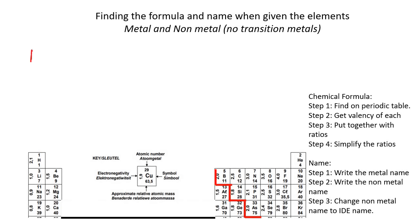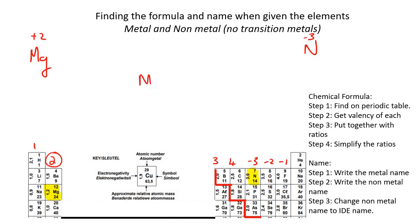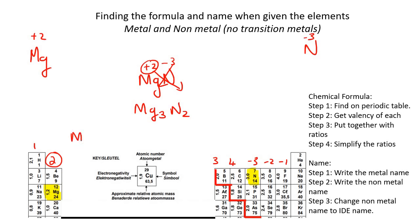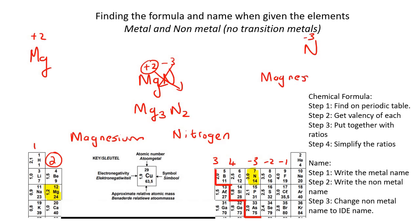Our last example is Mg and N. Mg is here on the periodic table, N is here. Mg has a valency of plus two, N is negative three. Cross the numbers: it becomes Mg₃N₂. Three and two are already simplified. To get the name: the metal is magnesium, the non-metal is nitrogen, and the IDE name is nitride — so it's magnesium nitride. Not nitrate, not nitrite — just nitride.